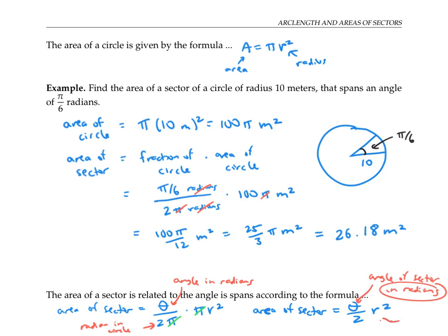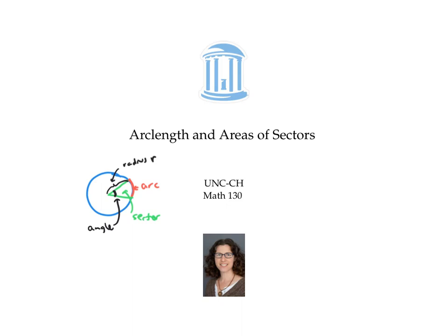As usual, r represents the radius of the circle. If your angle is in degrees instead of radians, that's not a big deal — we can always convert from degrees to radians first before using the formula. In summary, for a sector of angle theta given in radians, the arc length is given by theta times r, and the area of the sector is given by theta over two times r squared, where r is the radius of the circle.